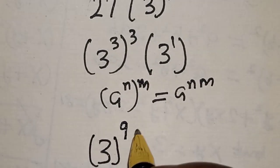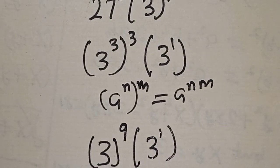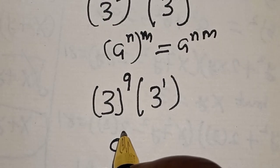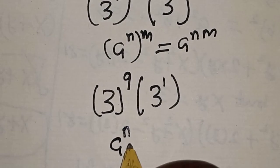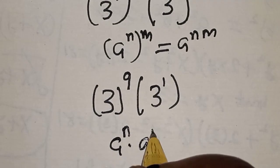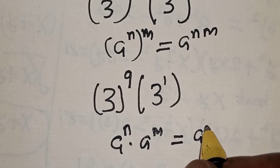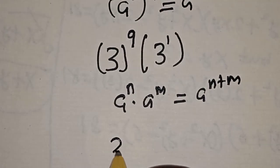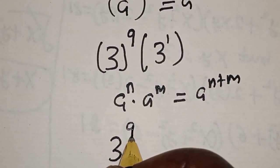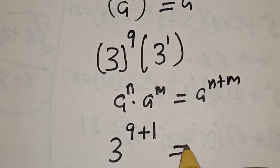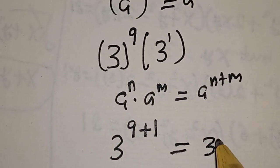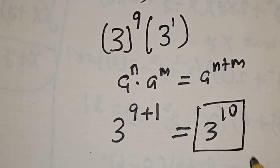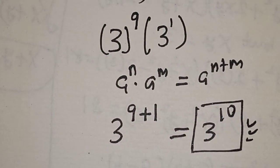Also remember this rule: if you have a raised to power n multiplied by a raised to power m, it equals a raised to power n plus m. So this becomes 3 raised to power 9 plus 1, which is equal to 3 raised to power 10. That is our final answer.